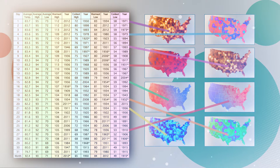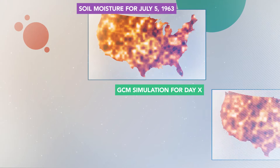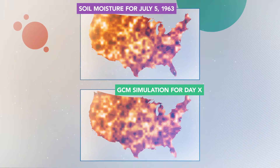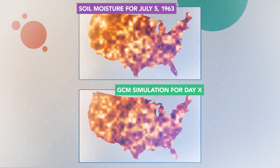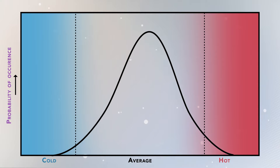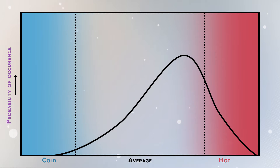Once we determine this statistical link, we compare every single historical map with a future map obtained from the GCM future projections to find the best match. After we select the historical map that most closely resembles the future map, we assign the corresponding value from the weather station data as our downscaled projection for that time period. We repeat the process until all the future maps are classified and generate a full time series of downscaled data. This technique is useful if our future maps look like our historical maps, but if the climate changes too much and the future maps are very different, then this technique might not be as useful.